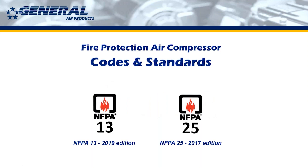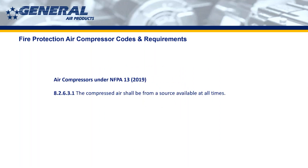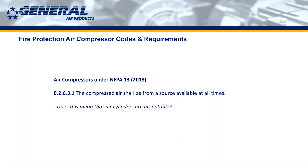Let's get into codes and standards, starting with the 2019 edition of NFPA 13. One of the first requirements: compressed air shall be available from a source at all times. That means something like air cylinders is acceptable; even a bike pump is acceptable as long as somebody is there to keep the system pressurized. But the best way to meet this requirement is with an air compressor. Note that the standard calls out a 'compressed air source available at all times,' not specifically an air compressor.